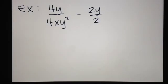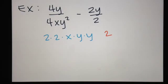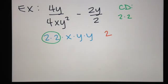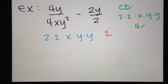If we look at this problem, when I break down the denominator of the first fraction, I get 2 times 2 times x times y times y. And if I look at the second fraction, then I just have 2. So my common denominator, putting both of those pieces together, I'm going to need two 2s — the left fraction had two of them while the right fraction only had one — and then an x and two y's. So altogether that is 4xy squared.